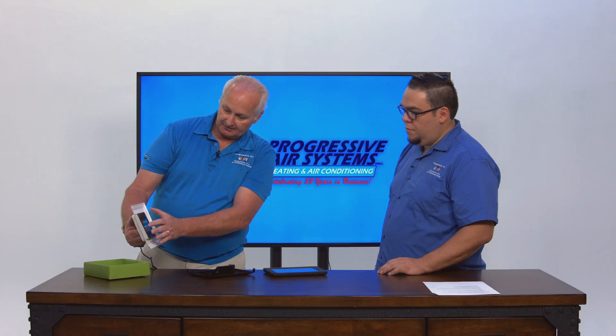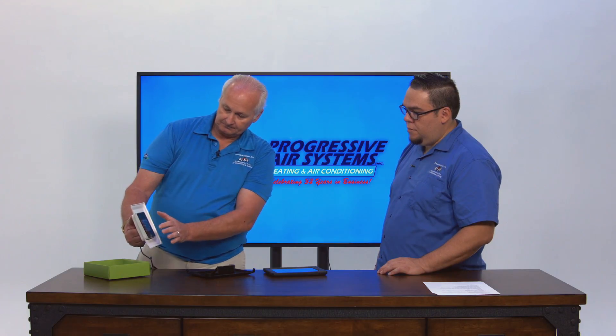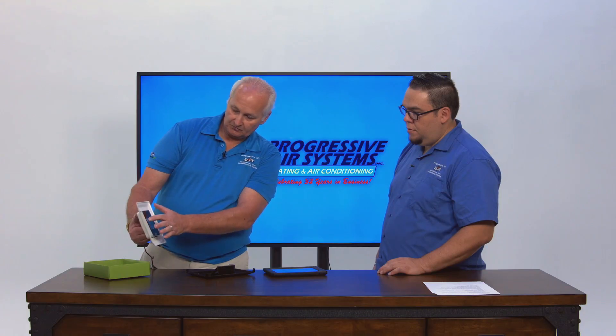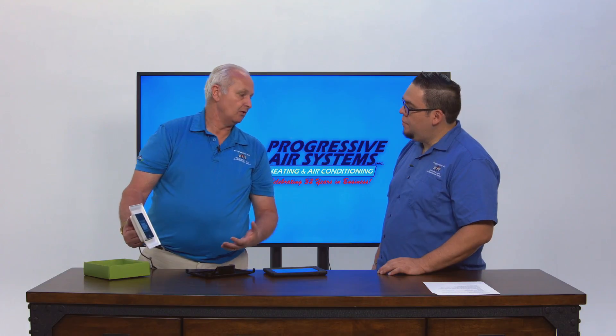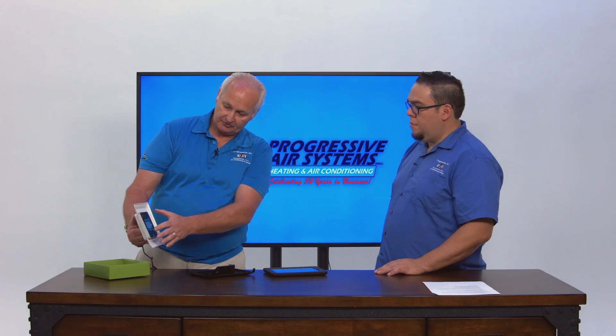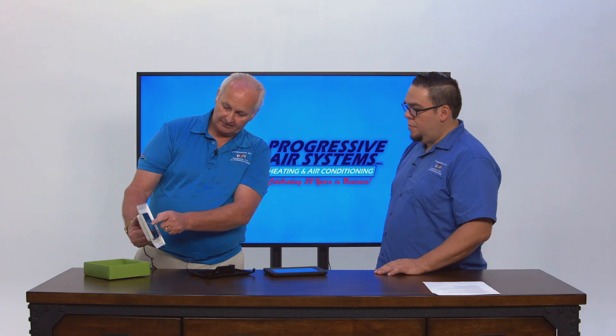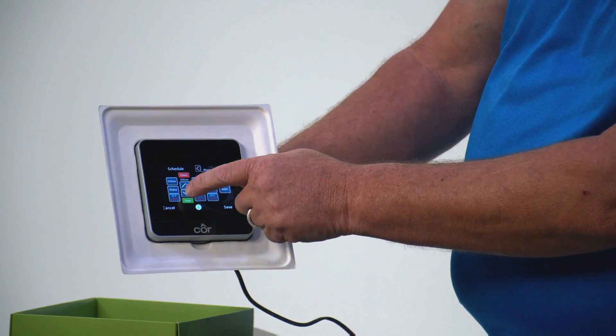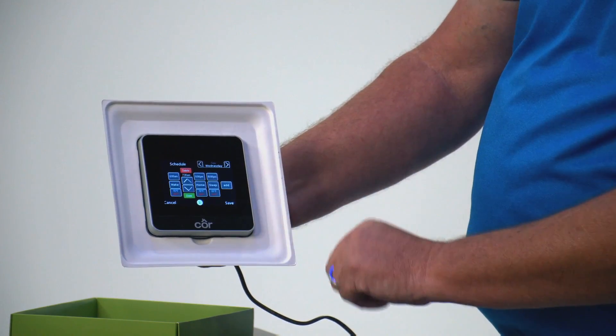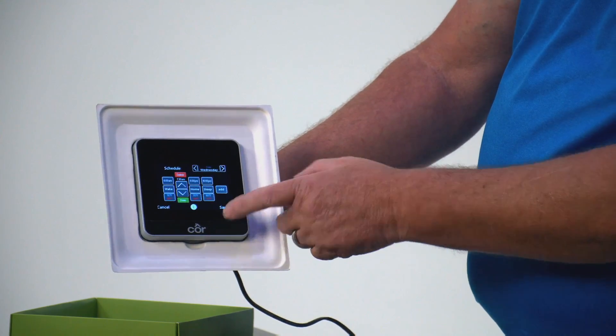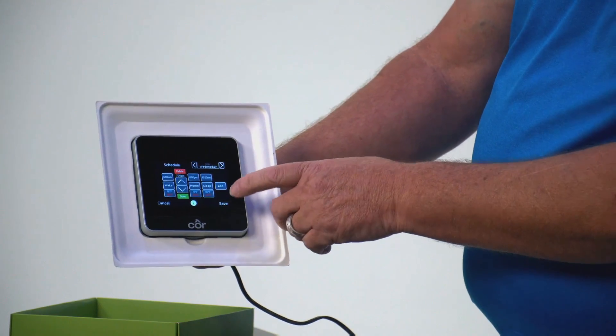Also, you can go in, say the wife comes home and doesn't like the temperature. You can edit the different schedules and different times. So for specific times when you know that you're going to be home or be away from home.